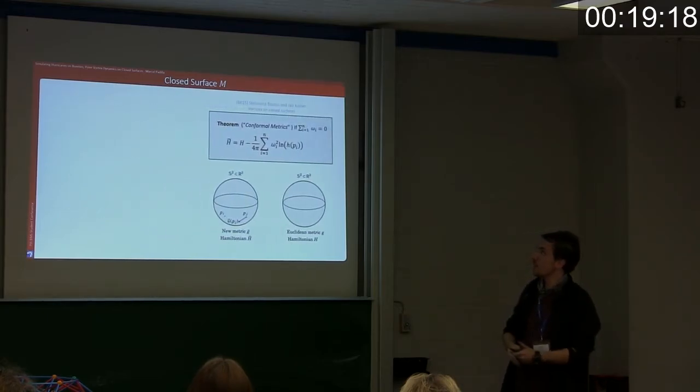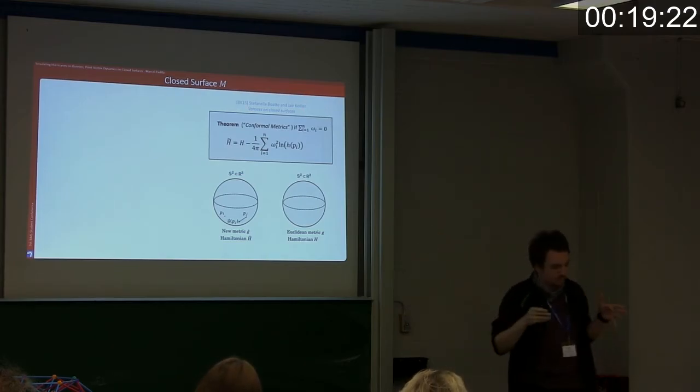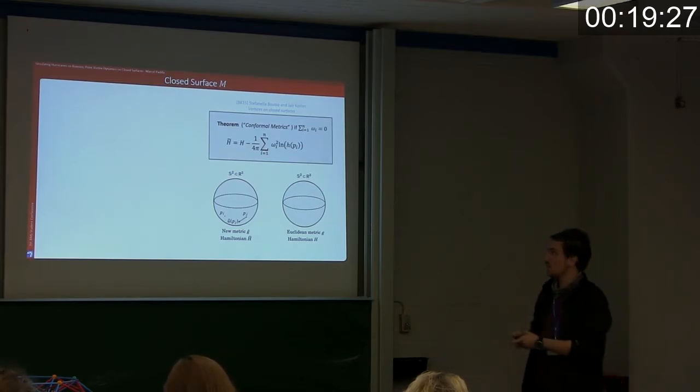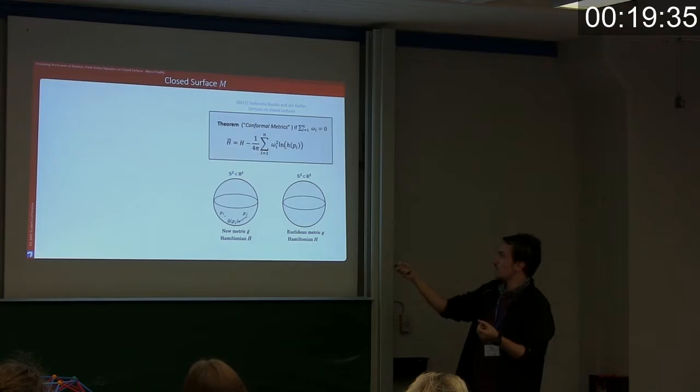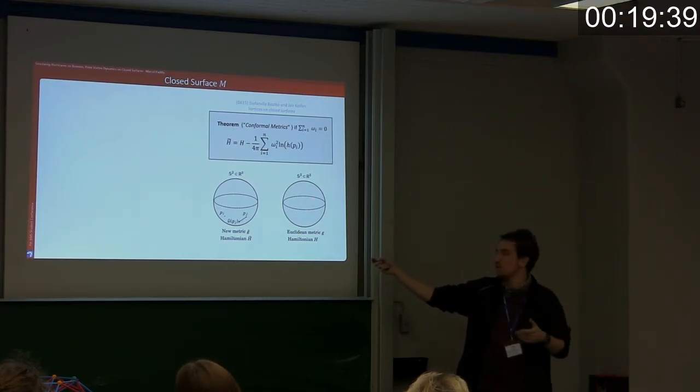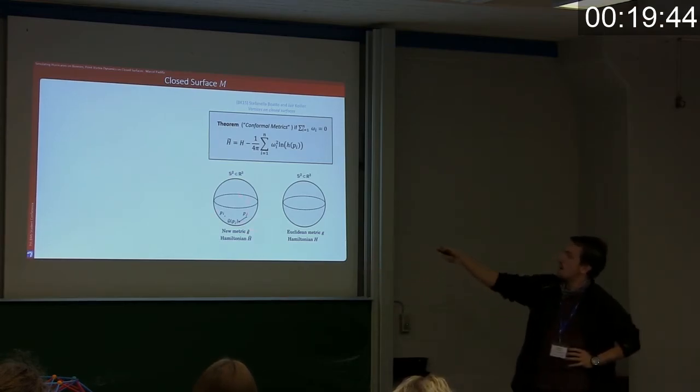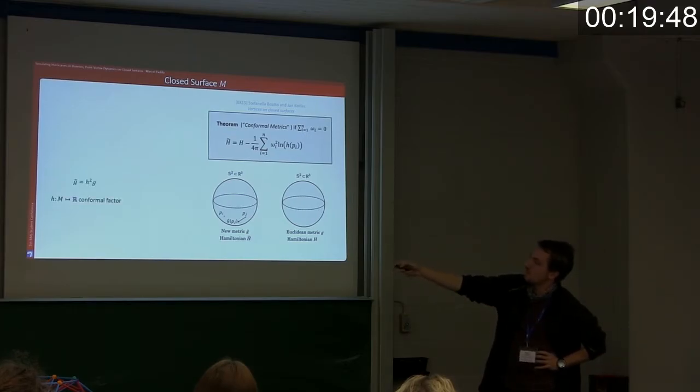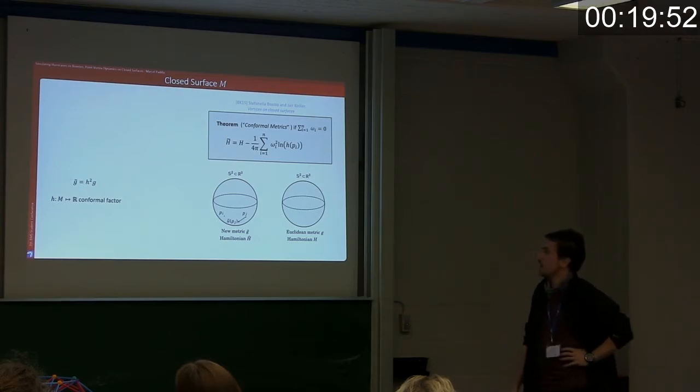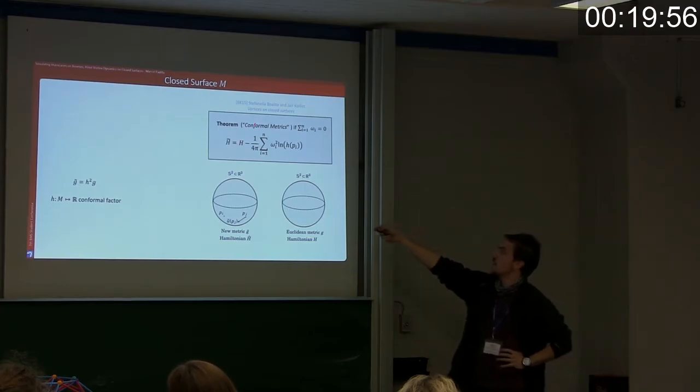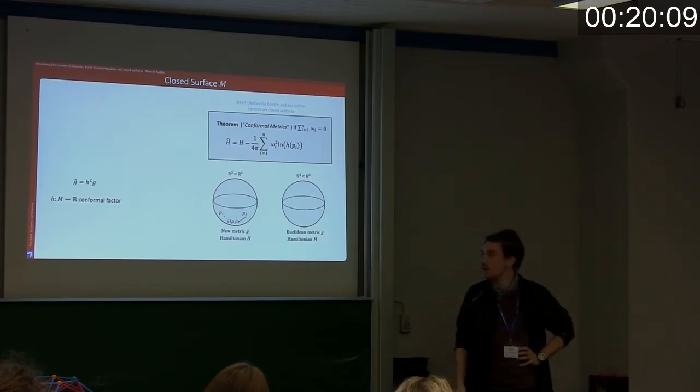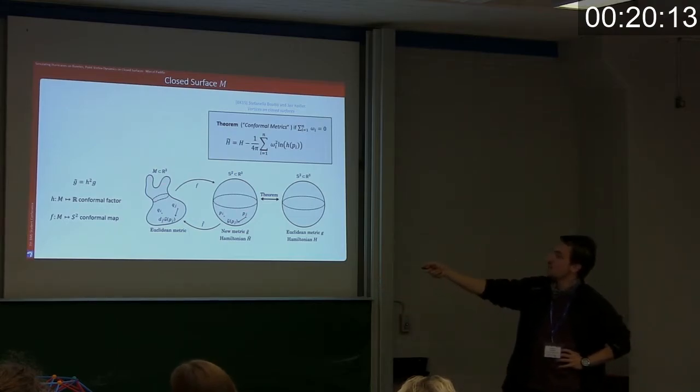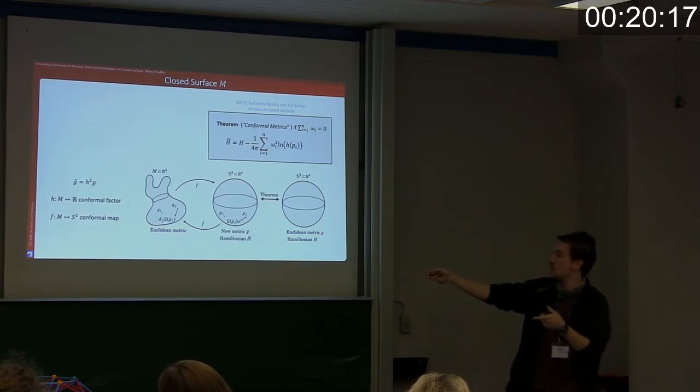But also in 2015, Boatto and Koiller, they published a paper on these point vortex dynamics and have a result where they describe how their Hamiltonian changes when a metric changes. So we have two spheres. This is a normal sphere, let's say, metric g, a given metric. And then you have this other sphere, weird metric, g tilde. And they are related through a conformal factor. Here, this conformal factor h squared. And what Boatto and Koiller say is that you can express the new Hamiltonian as the old Hamiltonian minus a new term. And we will take advantage of this, but our bunny is not spherical, but we don't care because we can just make it spherical with a conformal map.